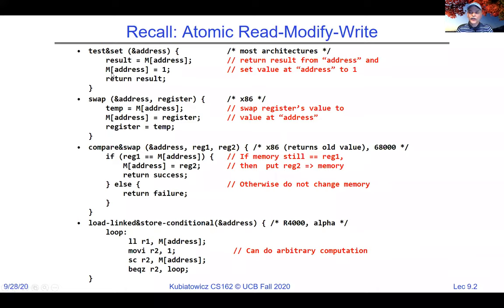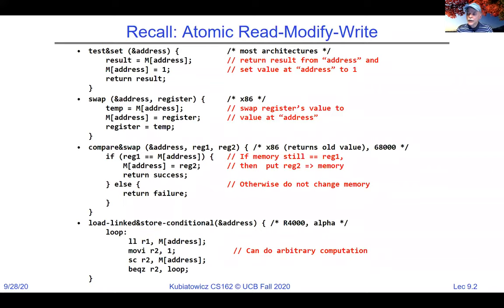The primary atomic instruction is test-and-set, which everybody knows about. We also talked about swap, compare-and-swap, and load-link/store-conditional. The key thing is that everything inside the braces happens all at once in one cycle, atomically, in a way that cannot be interrupted by any other thread.